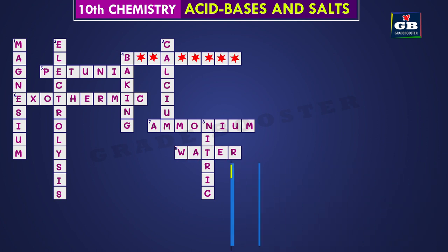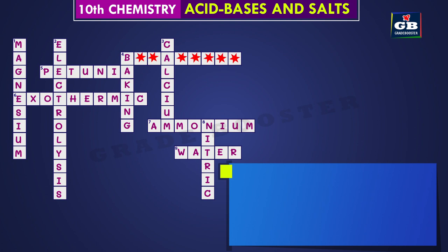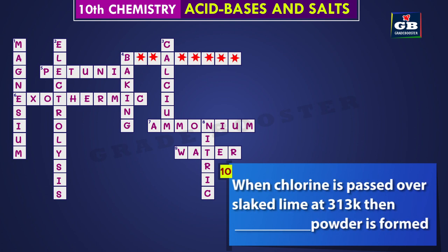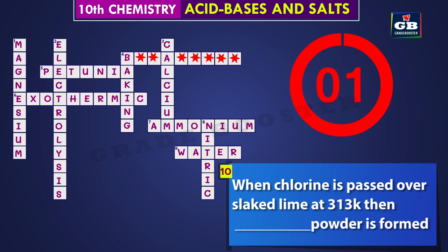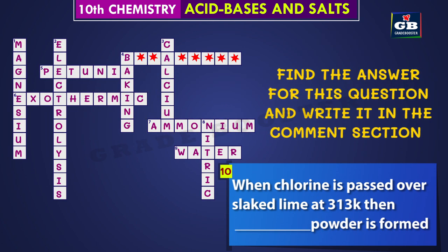Let's see the last one — ten across. When chlorine is passed over slaked lime at 313 Kelvin, then dash powder is formed. Find the answer for this question and write it in the comment section. Hope you like this video!